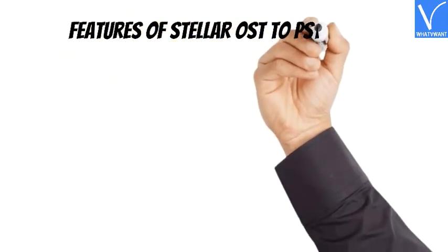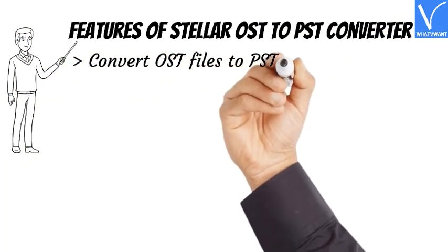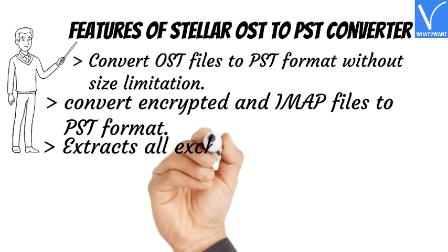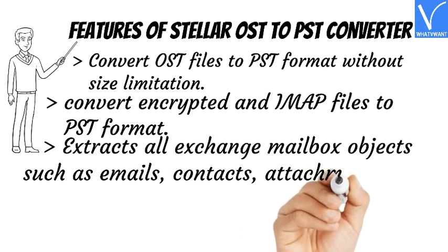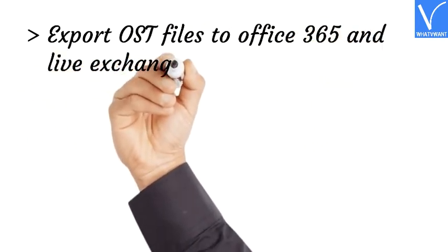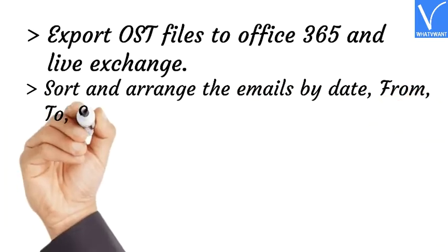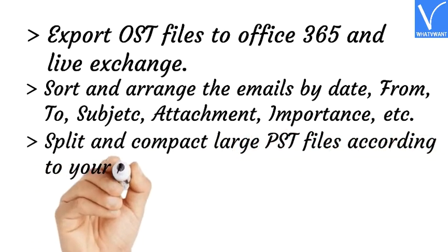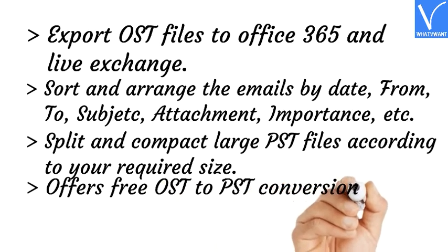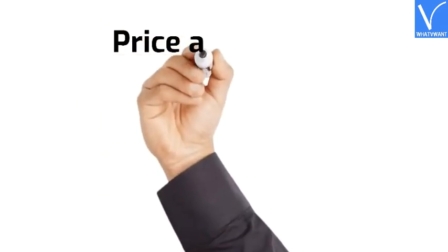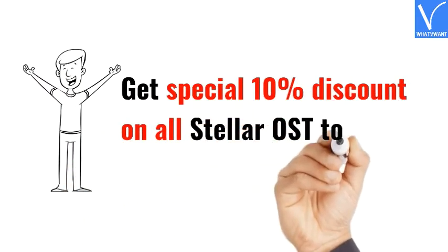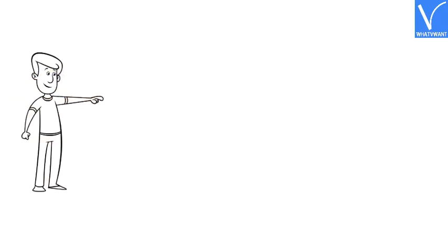Features of Stellar OST to PST Converter: Convert OST files to PST format without size limitation. Convert encrypted and IMAP files to PST format. Extracts all Exchange mailbox objects such as emails, contacts, attachments, notes, journals, calendars, etc. Export OST files to Office 365 and live Exchange. Sort and arrange emails by date, from, to, subject, attachment, importance, etc. Split and compact large PST files according to your required size. Offers free OST to PST conversion for 20 emails per folder. The price and plans are exhibiting on the screen. Our viewers get a special 10% discount on all Stellar OST to PST Converter licenses. Check the description for the product and discount links.